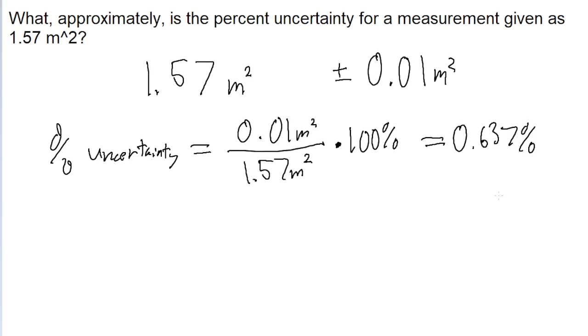Now again, with problems like this, there's a lot of wiggle room, and we're only asked for an approximate value. So we're really only estimating. So the best thing to do is to round this up to one significant figure. So let's just round this to 1%. There's a 1% uncertainty in our measurement.